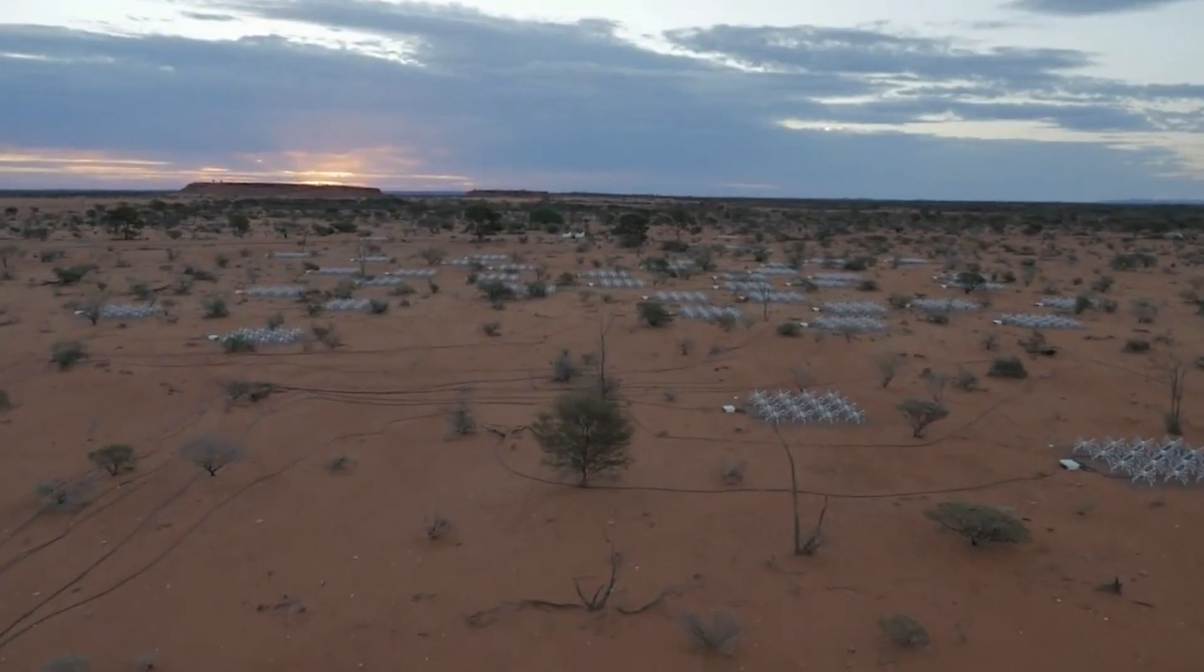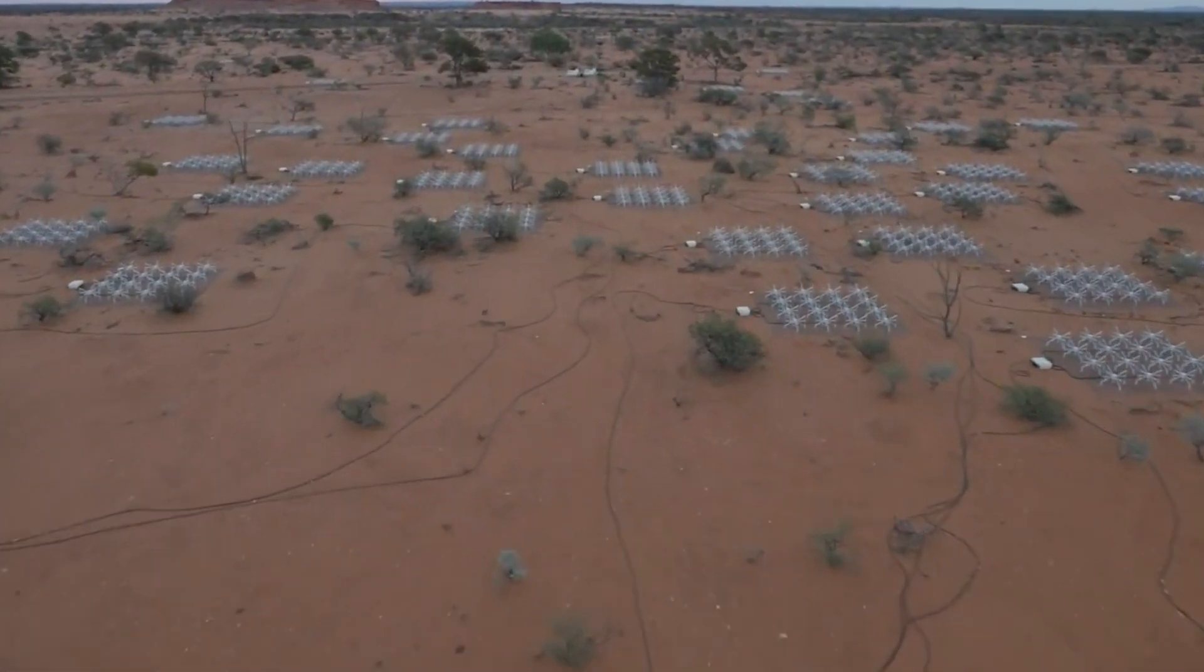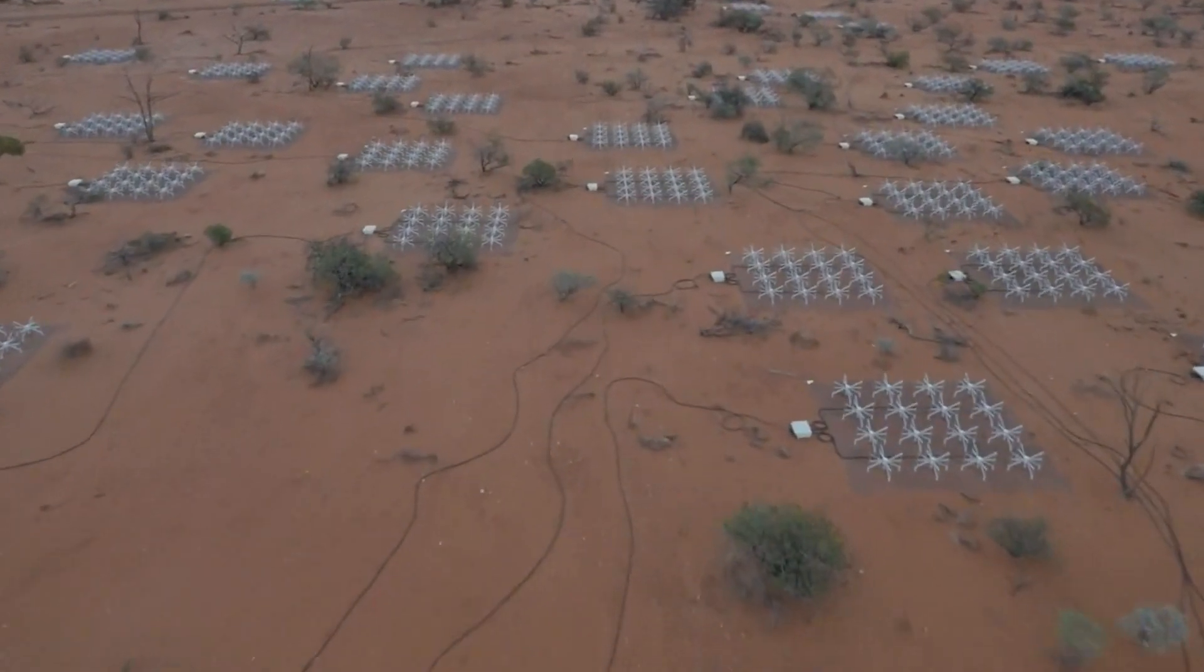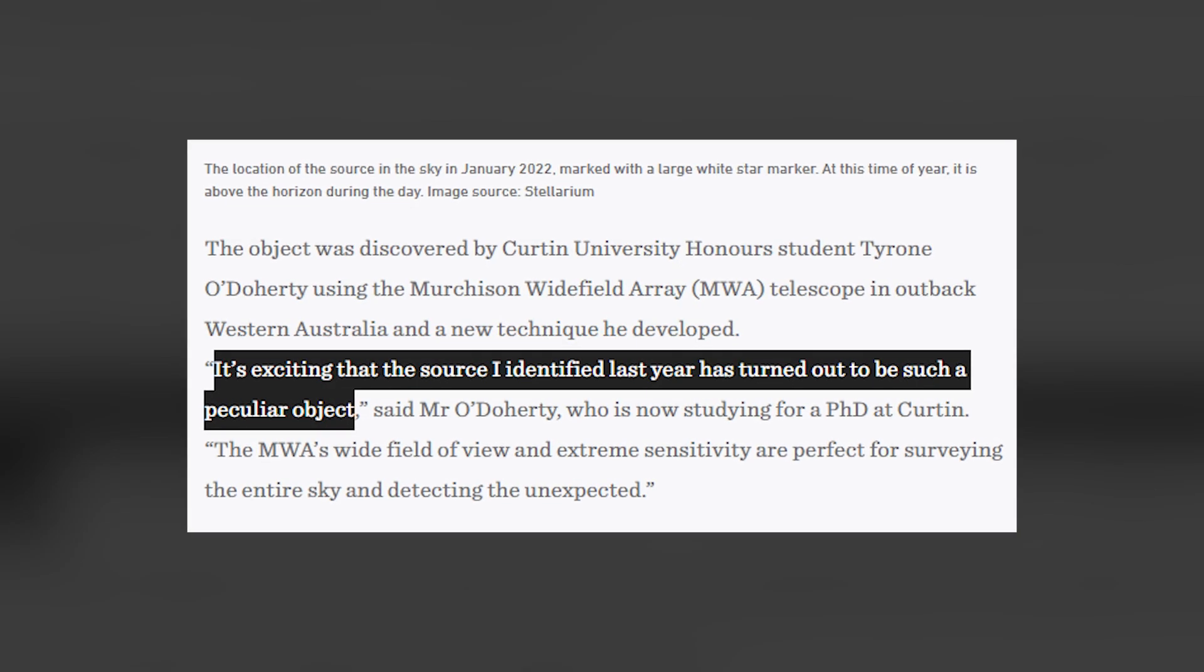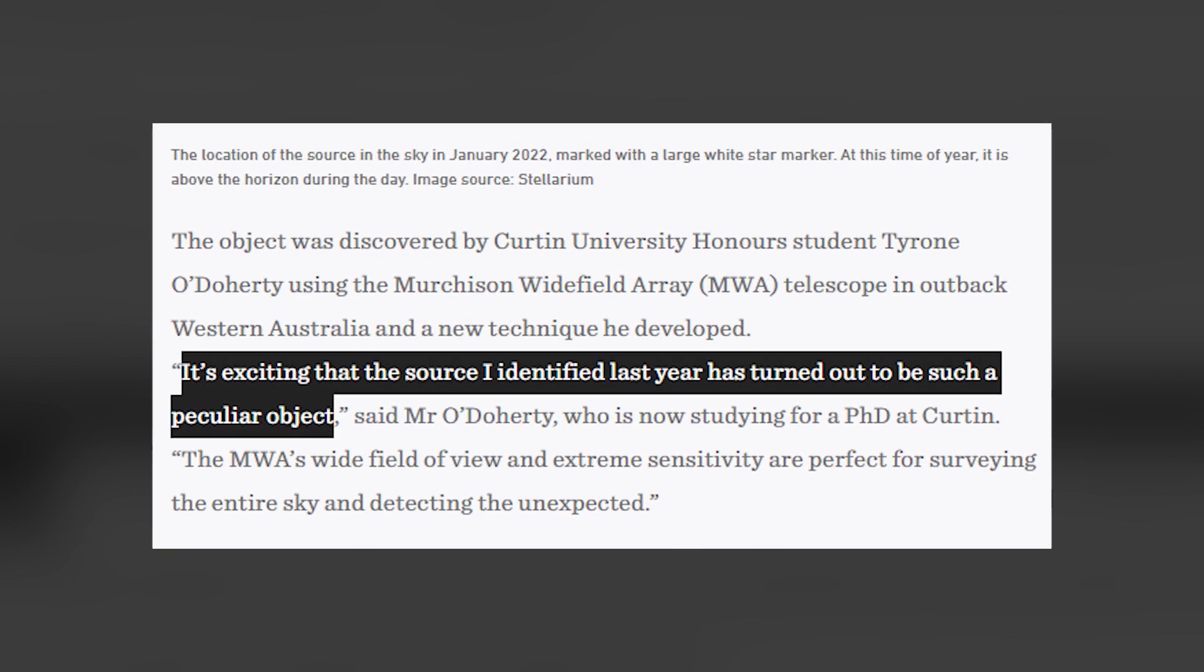Tyrone O'Doherty, a PhD student at Curtin University, first discovered the object in archival data that the Murchison Widefield Array Telescope collected in 2018. The finding was published in the journal Nature back in January. It's exciting that the source I identified last year has turned out to be such a peculiar object, O'Doherty said in the release.